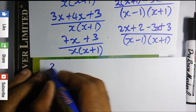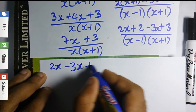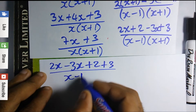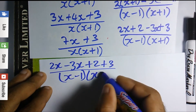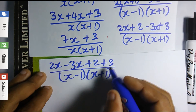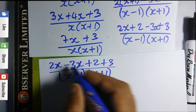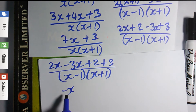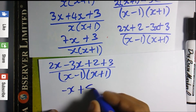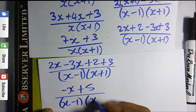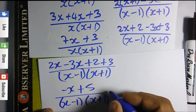Collecting like terms: 2x minus 3x is negative x, and 2 plus 3 is 5. Since the negative number is larger, we keep the negative sign on x. So the final answer is (−x + 5) / [(x−1)(x+1)].